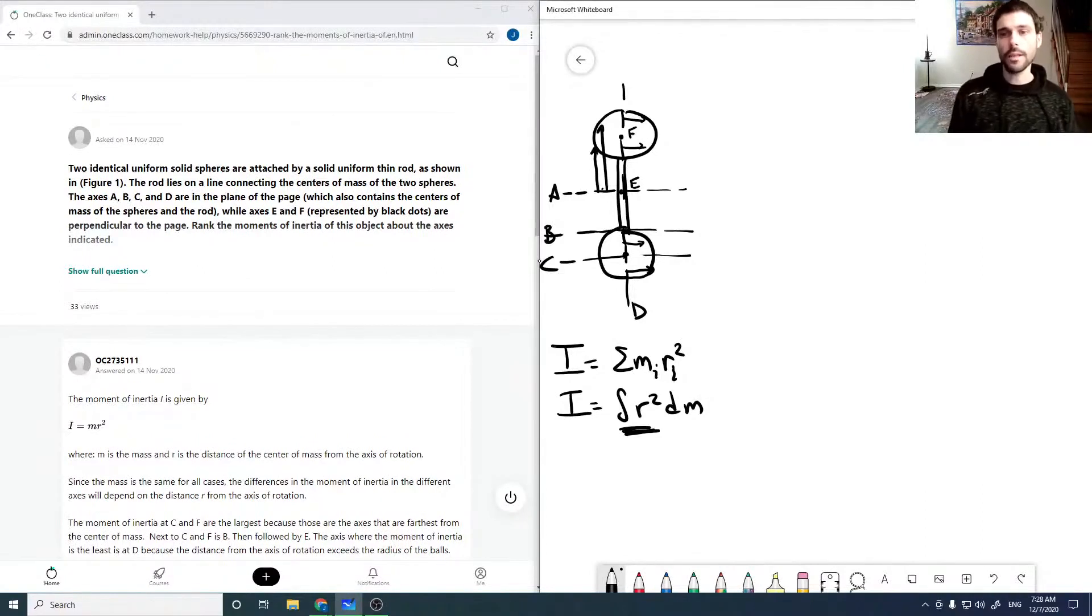Whichever has the highest distance from the axis would have the highest moment of inertia, and whichever has the lowest would have the lowest moment of inertia.